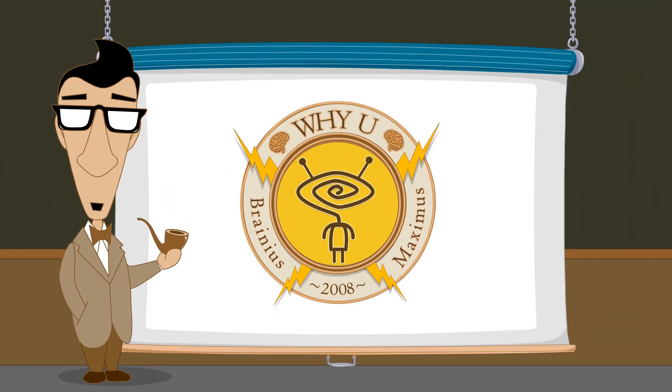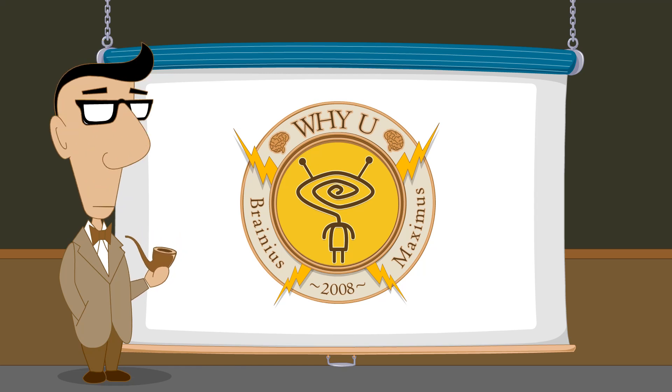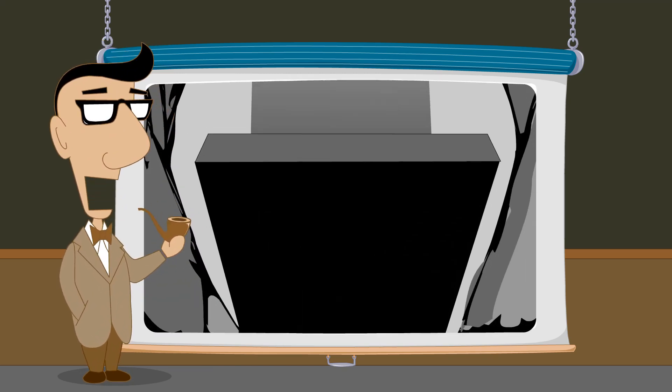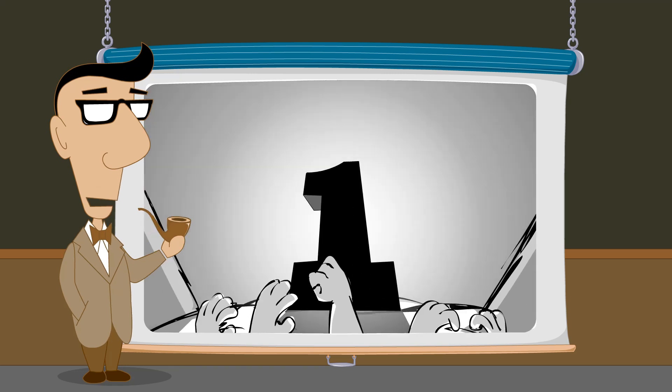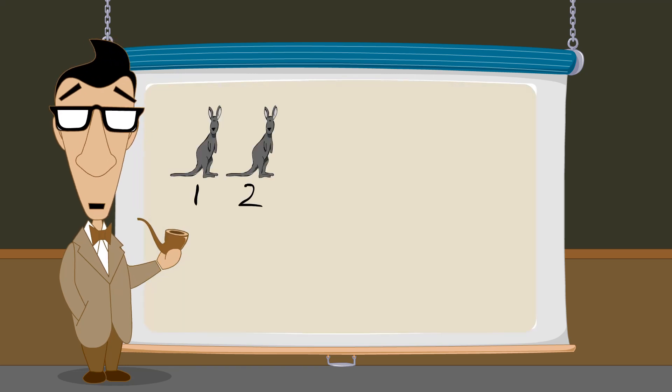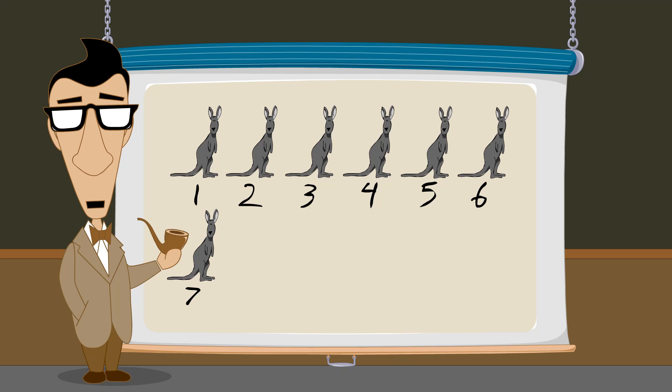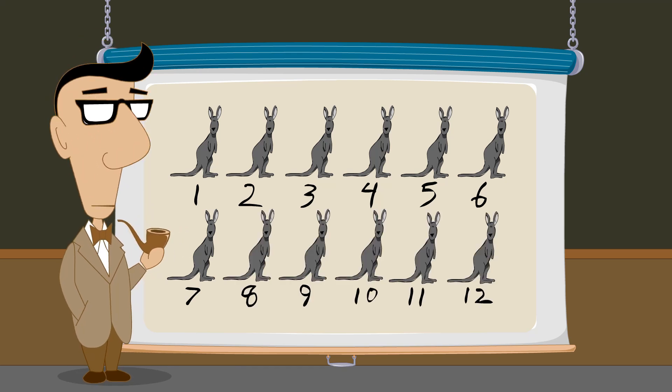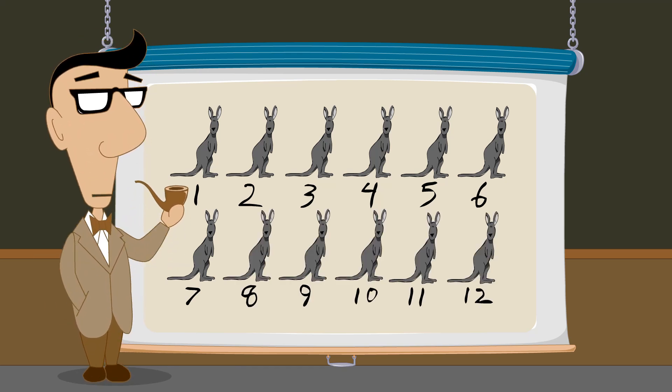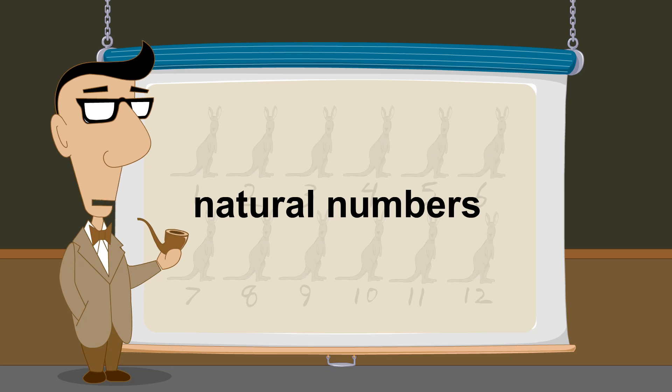Hello, I'm Professor Von Schmohawk, and welcome to Why U. In the last lecture, we explored the dawn of number systems. These early number systems were concerned only with numbers used to count objects. In mathematics, we call these counting numbers the natural numbers.